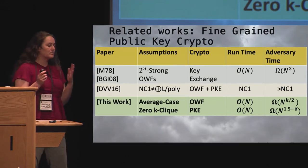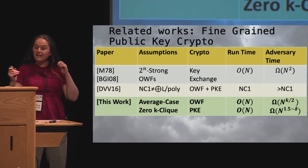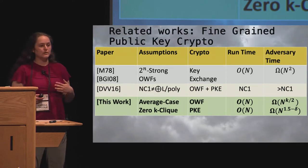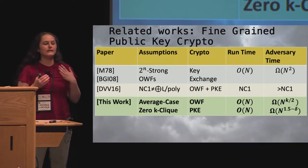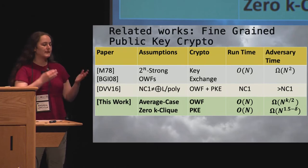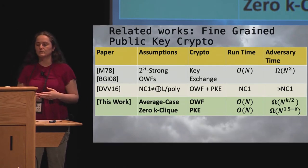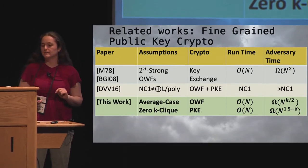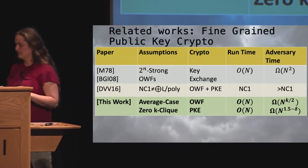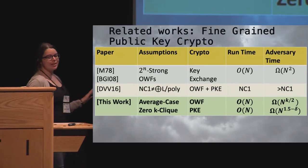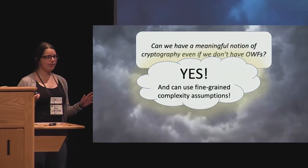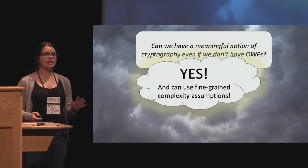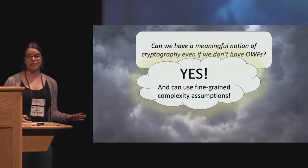Well, then, in this work, based on an average case zero k clique assumption, we're able to build both one-way functions and public key encryption, where the one-way functions get a gap of N to the k over 2, based on an average case zero k clique assumption, and our PKE gets N to the 1.5 minus a little bit. So, revisiting that question from before, yes, we can have a meaningful notion of cryptography, and we can use these fine-grained complexity assumptions to do it.